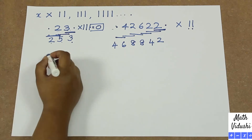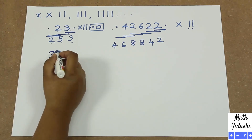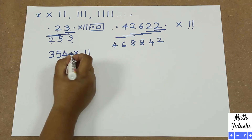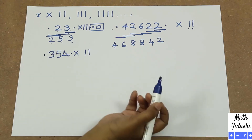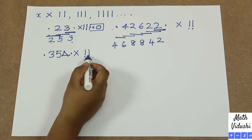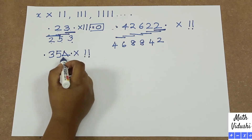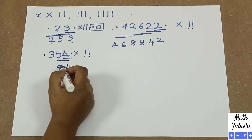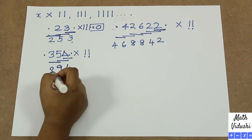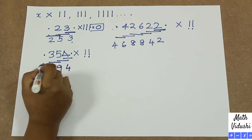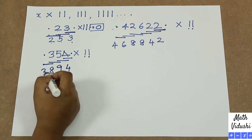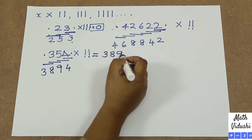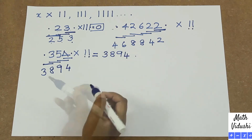Shall we do another sum to make it clearer? 354 multiplied by 11. You put one dot at the beginning and one dot at the end, and take 2 numbers at a time because 11 has 2 digits. So: 4+0=4, 4+5=9, 5+3=8, 3+0=3. So 354 multiplied by 11 gives you 3894.